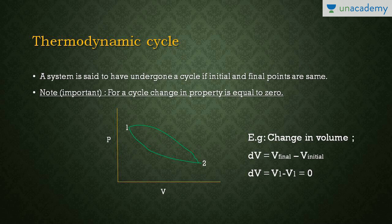This is a very important term: thermodynamic cycle. A system is said to have undergone a thermodynamic cycle if the initial and final points are the same. For example, the process goes from 1 to 2 and then from 2 to 1 — the initial point is 1 and the final point is also 1. Note: for a cycle, the change in any property is equal to zero. For example, change in volume equals final volume minus initial volume: V1 minus V1 equals zero.